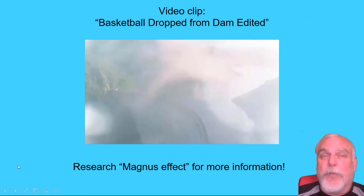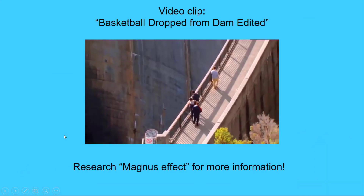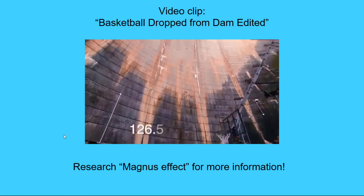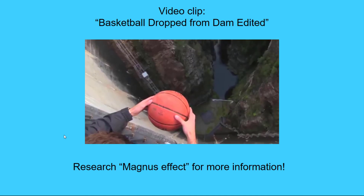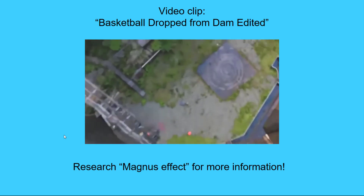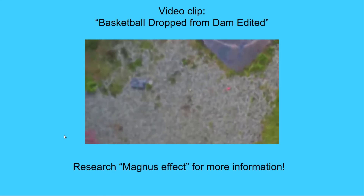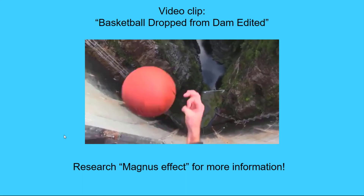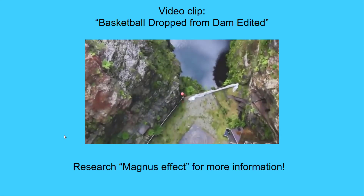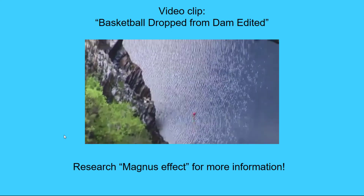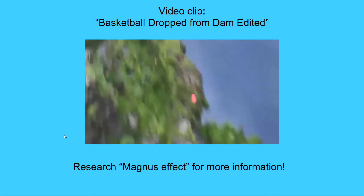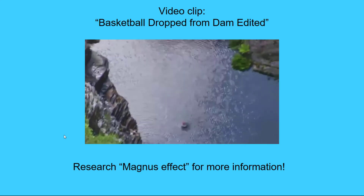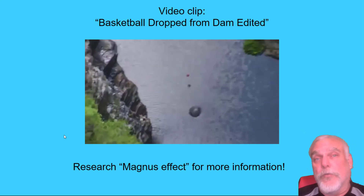Let's take a look at a clip of someone dropping a basketball off a very high dam. Some friends went to the Gordon Dam in Tasmania, which is 126.5 meters or 415 feet high, and dropped a basketball over the edge. It gets pushed around by the breeze but lands basically right below where it was dropped. Then they drop another basketball with a bit of backspin — and it just takes off. That's the Magnus Effect — it's worth a video search, really neat.